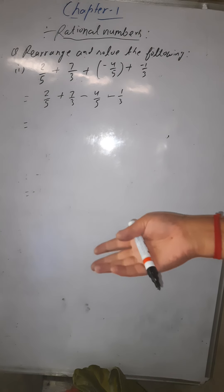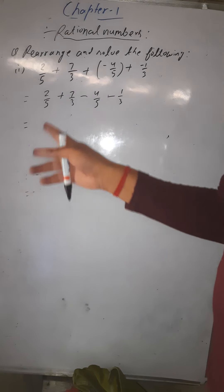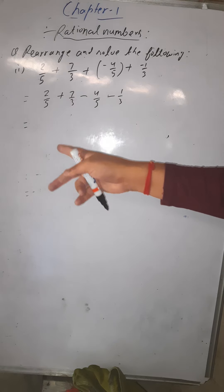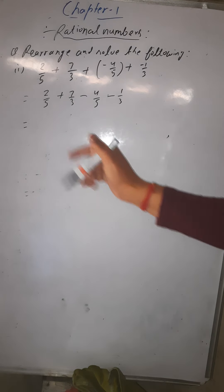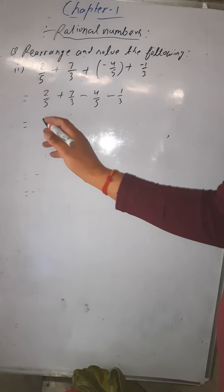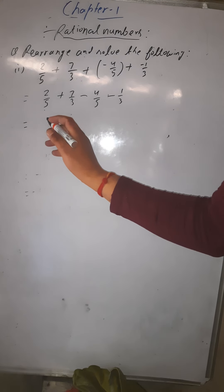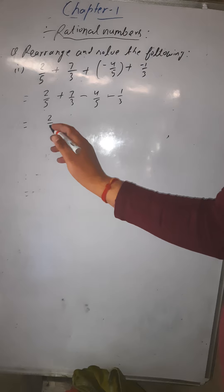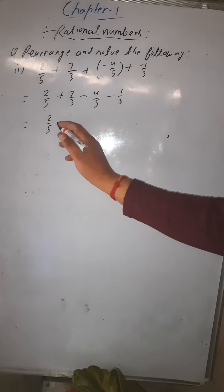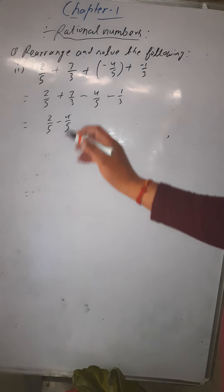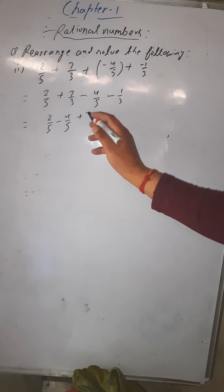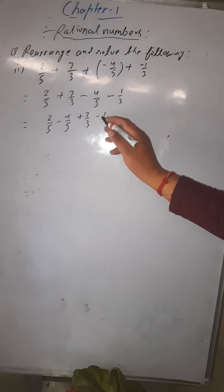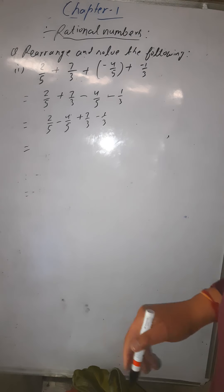Using commutativity and associativity, nothing changes when we regroup. Take the rational numbers with the same denominators together. So write 2/5 and minus 4/5 together, since both have denominator 5. Then write 7/3 and minus 1/3 together, since both have denominator 3.